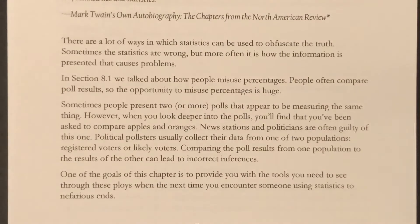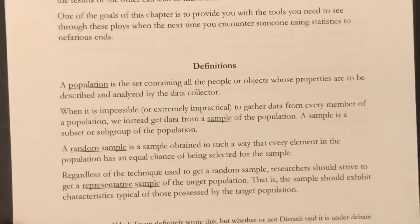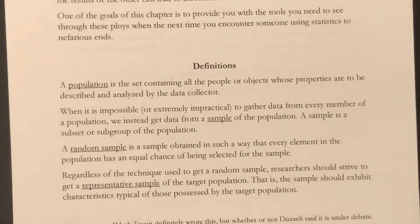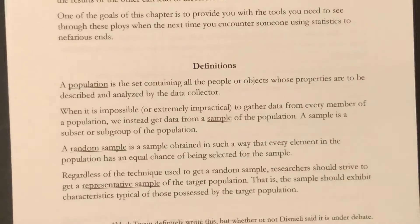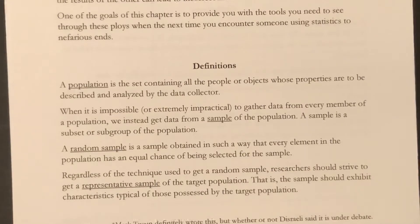Now we need some definitions. A population is the set containing all of the people or objects whose properties are to be described and analyzed by the data collector — kind of like the universal set when we were talking about set theory. When it is impossible or extremely impractical to gather data from every single member of a population, we instead get data from a sample of the population. A sample is a subset or subgroup of that population. In order to have good, reliable statistics, we need to have a random sample, meaning every single person or element in that population has an equal chance of being selected for the sample.